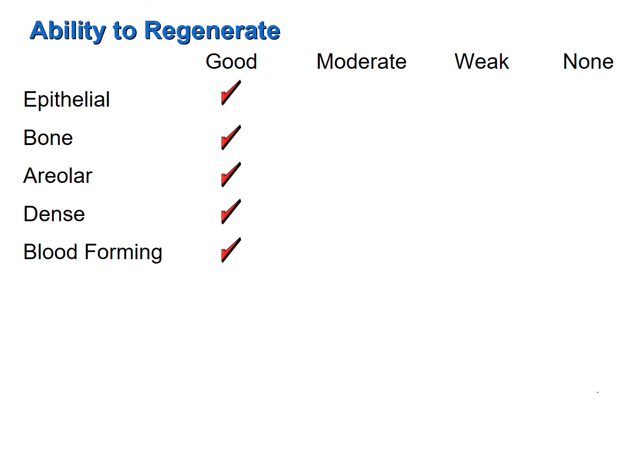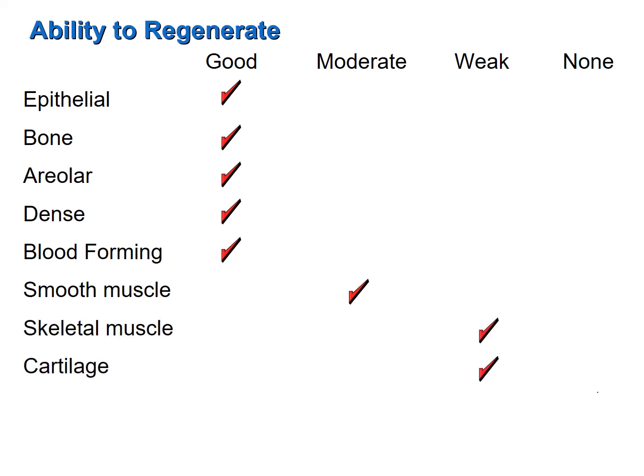Organs containing large amounts of these tissues are least likely to be permanently affected by injury. Smooth muscle tissue also regenerates fairly well. Tissues that don't regenerate well include skeletal muscle tissue and cartilage. Nervous tissue and cardiac muscle tissue do not regenerate at all — which is why damage to the heart results in permanent loss of function, since any cardiac muscle tissue destroyed will be replaced by scar tissue, which lacks the same properties as cardiac muscle.